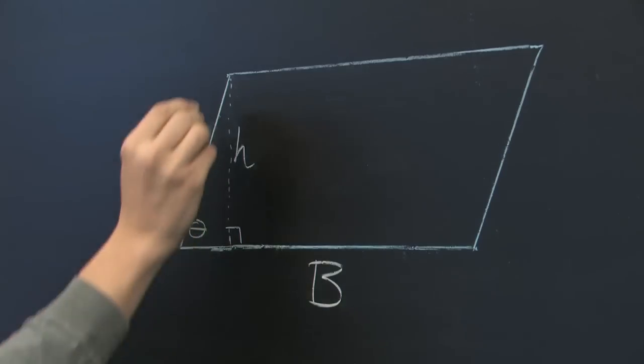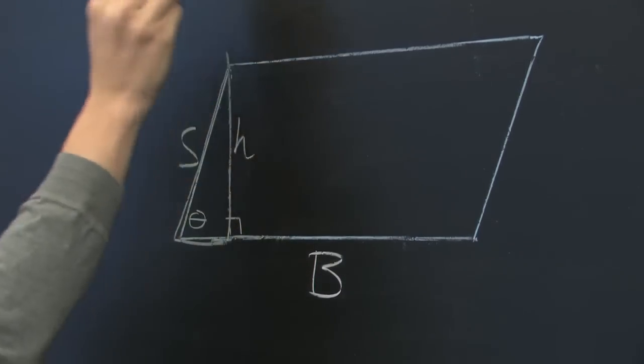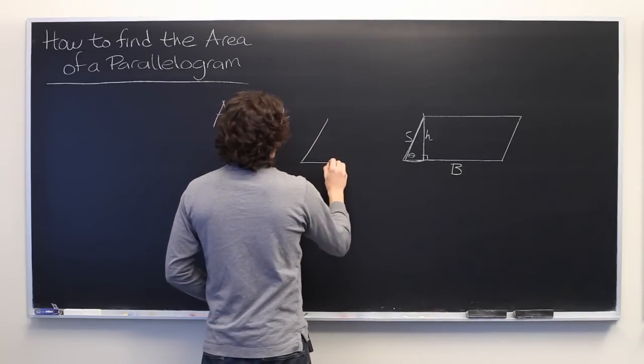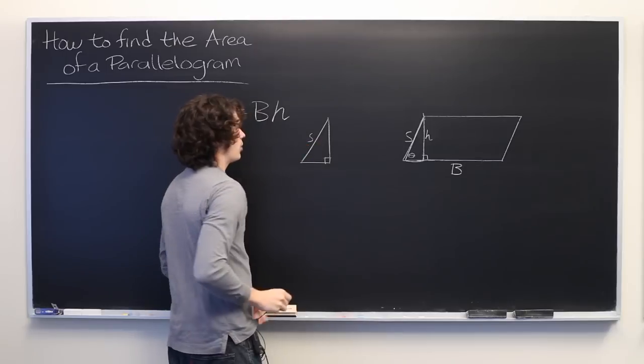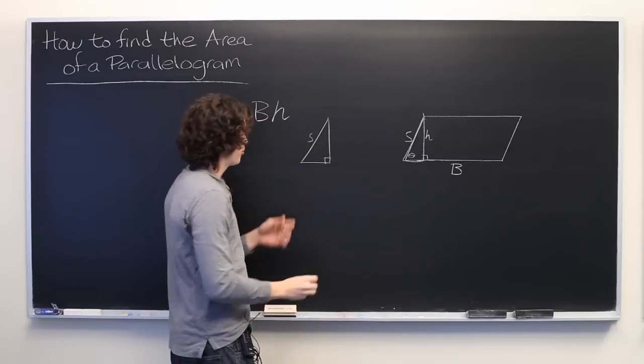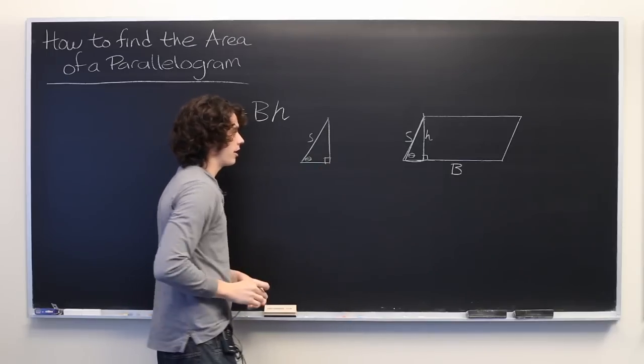Because we can think of this shape here as being a right triangle. So we know the length of the hypotenuse, and we know this angle here. And we know that's a right triangle.